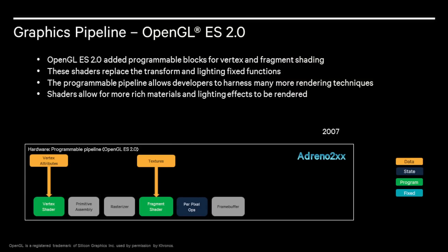Let's talk about the evolution of the pipelines. In OpenGL ES1, the pipeline was fixed. Essentially you could switch things on or off, but it was impossible to custom program the pipeline. OpenGL ES2 was a significant milestone for mobile graphics. Custom vertex and fragment shaders allowed a programmer to customize the pipeline. Some of the important features added in OpenGL ES2 are programmable blocks for vertex and fragment shading. These shaders replaced the transform and lighting fixed functions that were normally switched on or off. The programmable pipeline allows developers to use many more rendering techniques, and the shaders allow for much more rich materials and lighting effects to be calculated.